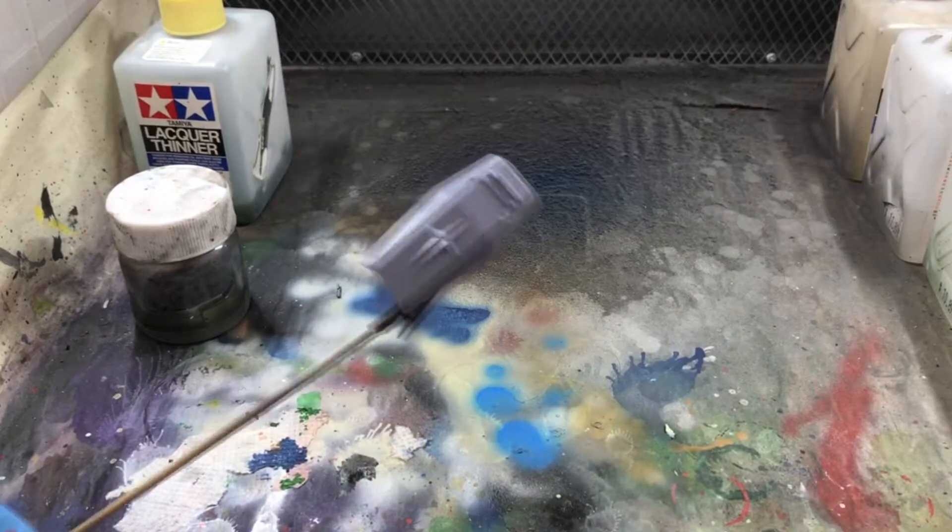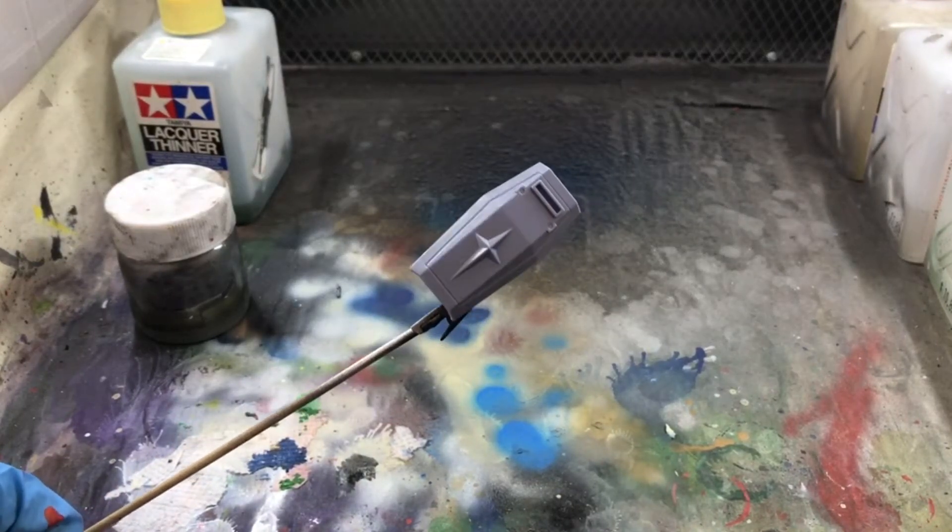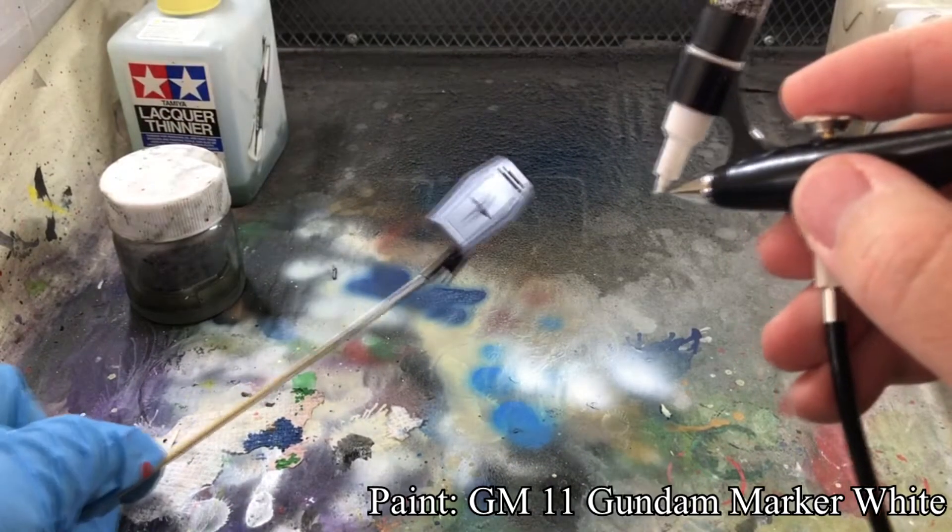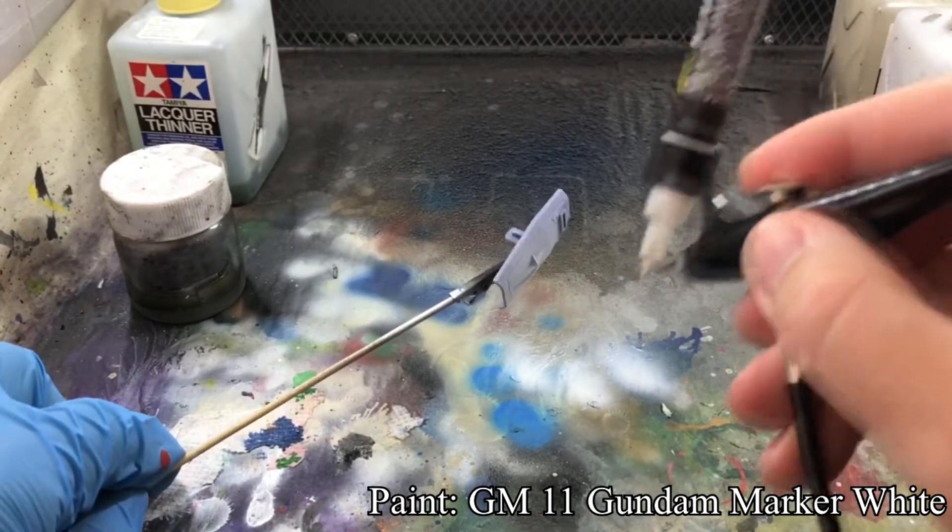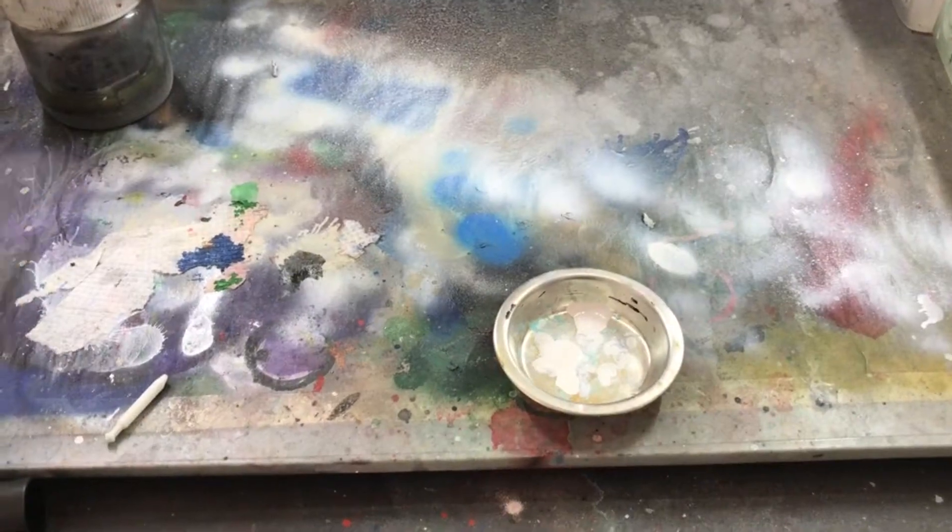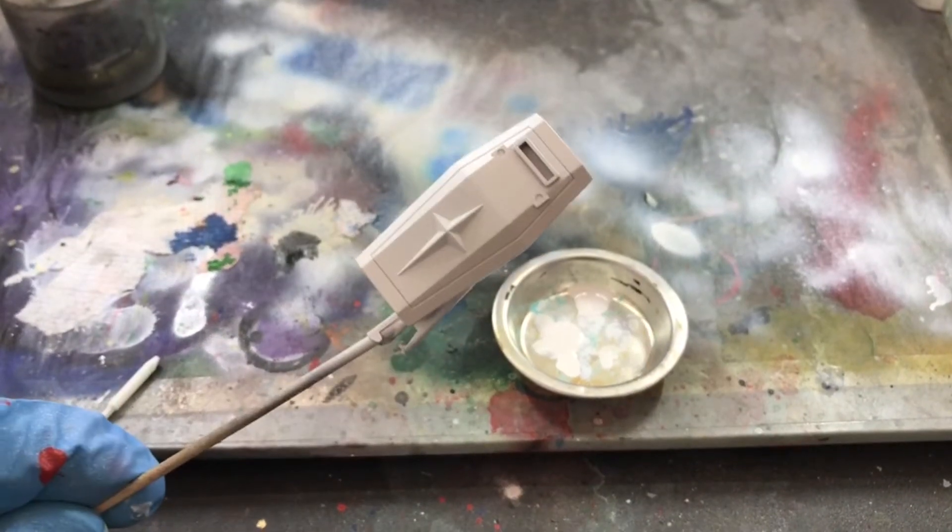For today's demonstration, I'll be using Gundam Marker Airbrush to paint this shield. I used Gundam Marker White to base coat the shield in white. I sprayed the paint in short bursts. When the paint thoroughly covered the shield, I let it dry thoroughly.